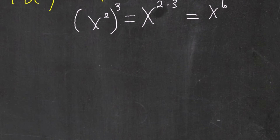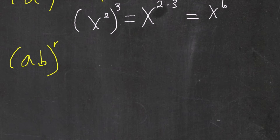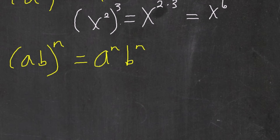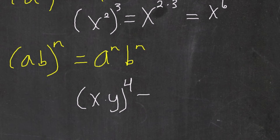The law of exponents also tells us that if we have two different numbers and they're both being raised to a certain exponent, we can simplify this expression by rewriting each number individually raised to the exponent. For example, let's say I had x times y raised to the fourth power. We can rewrite it as x raised to the fourth power times y raised to the fourth power.